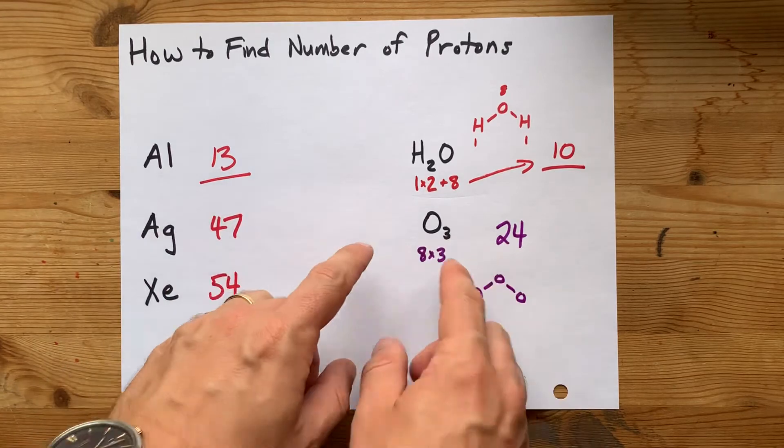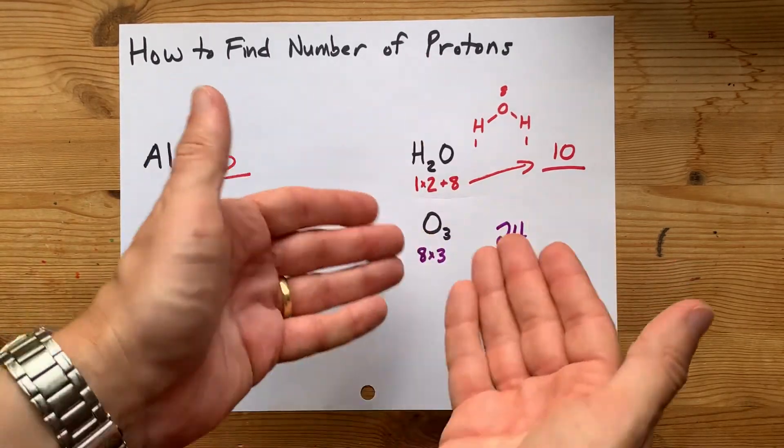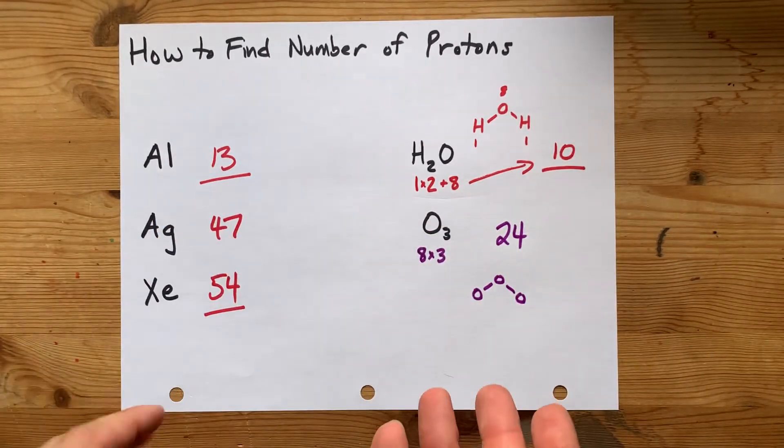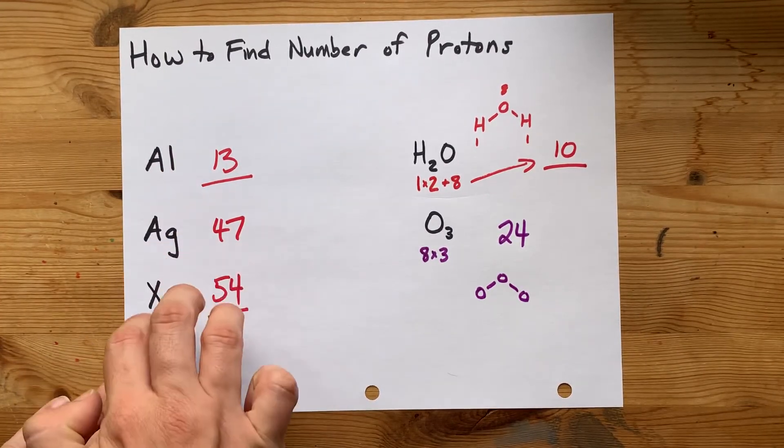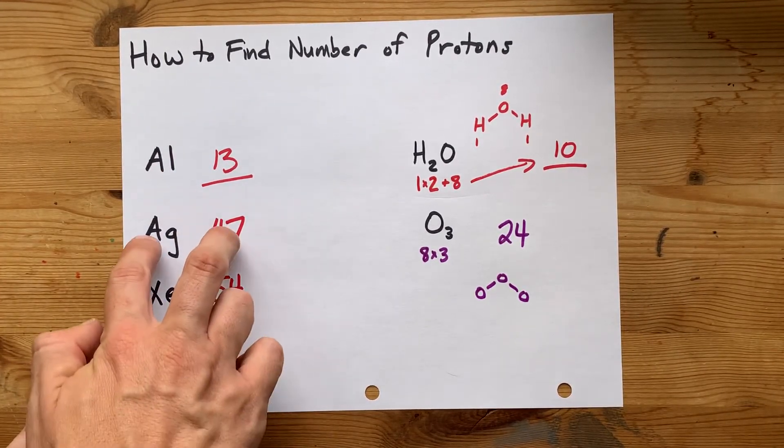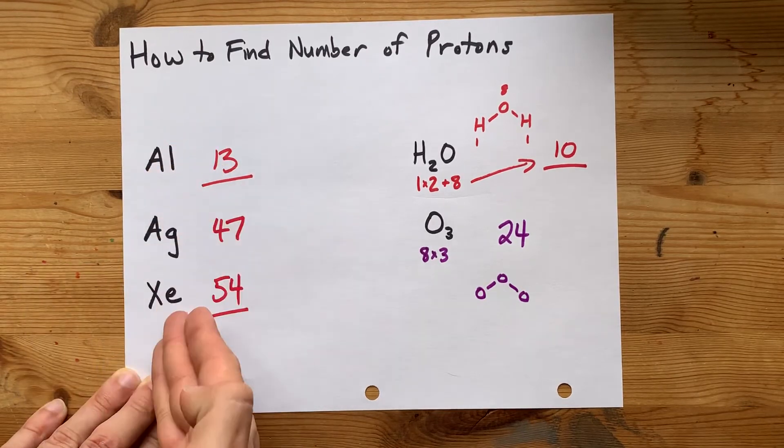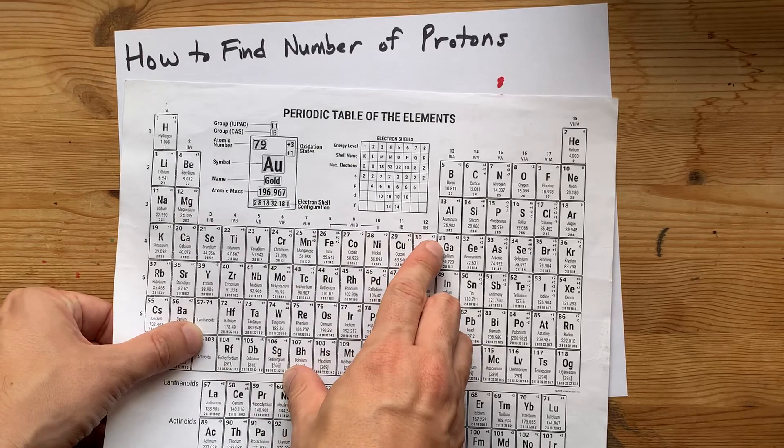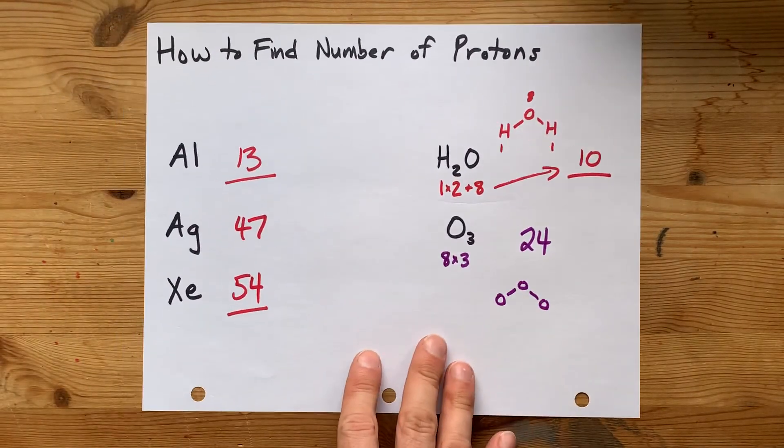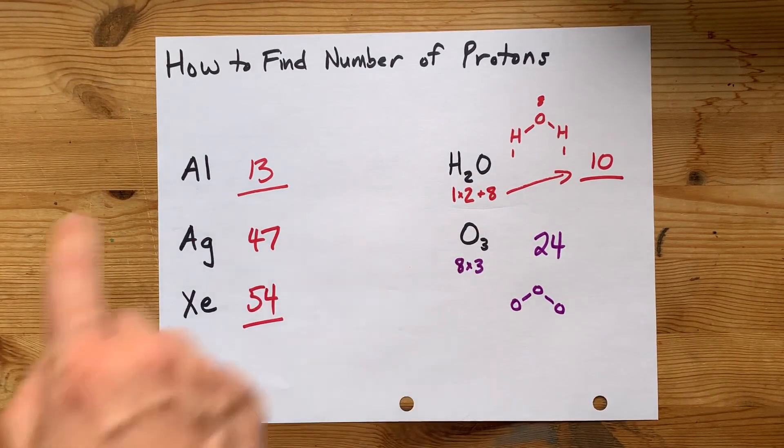Chemists never calculate the total number of protons in a particle, as far as I know. It matters much more that you know that the number of protons in an element is the atomic number from the periodic table. So with that, go forth and get hundreds. Best of luck.